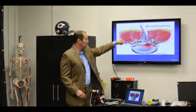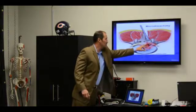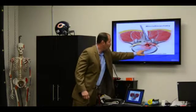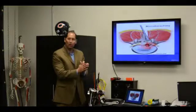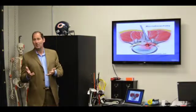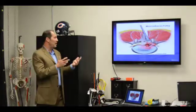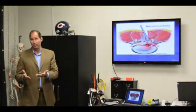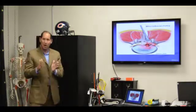So the standard operation is called a microdiscectomy. You make a very small incision in the back, you drill away some of the bone that enables you to get down to the disc, you take some of the disc out, a little bit more so more doesn't come out, and then you close it up.